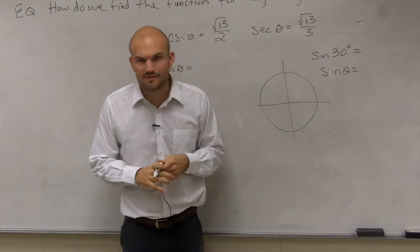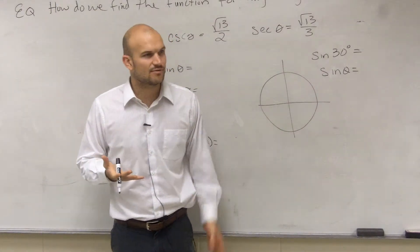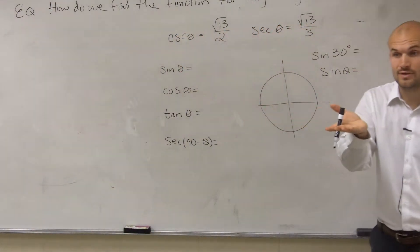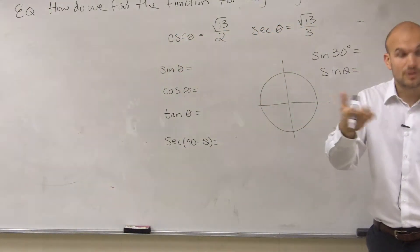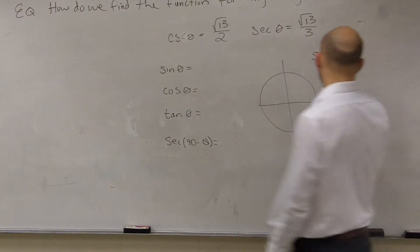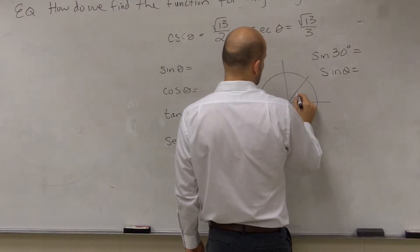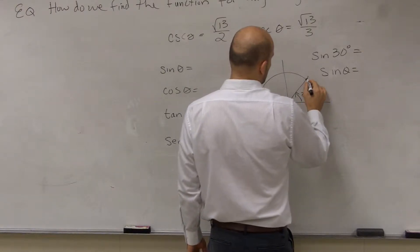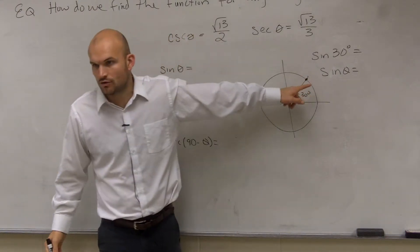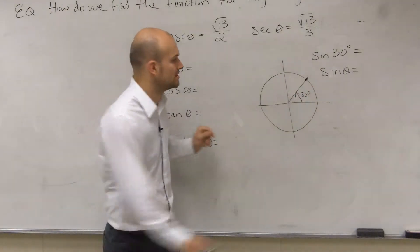How did we evaluate for sine of theta? This was in our previous section. Sine of theta represented the y-coordinate. If I said sine of 30 degrees, the sine represented that y-coordinate of my angle where it crosses the unit circle — the y-coordinate of that point on the unit circle.